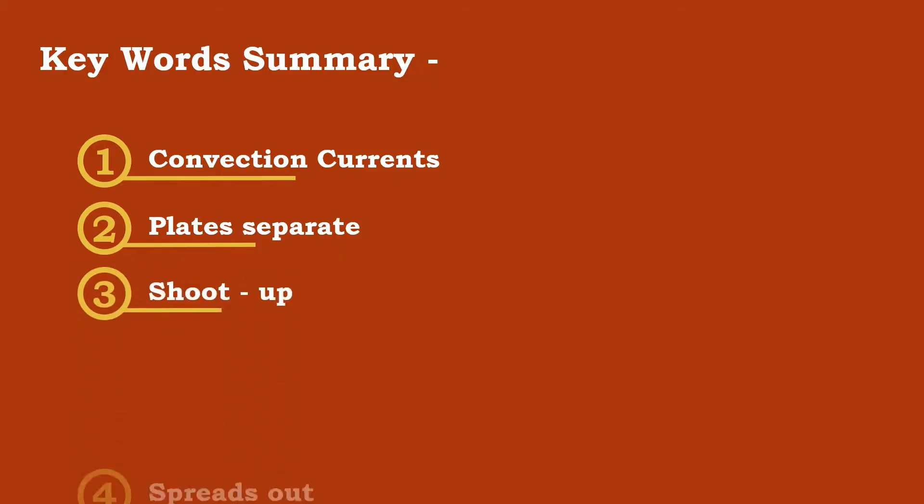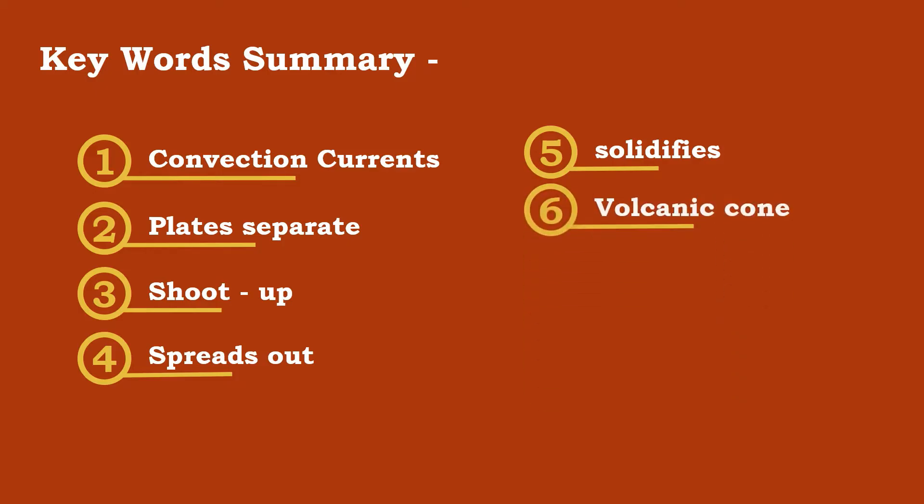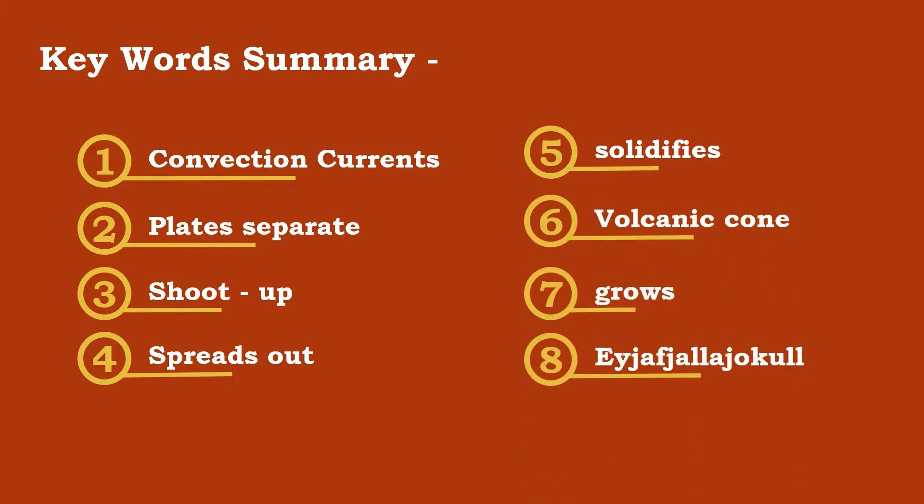So let's look at the keyword summary. Convection currents. Plates separate. Shoots up. Spreads out. Solidifies. Volcanic cone. Grows. Use these eight keywords and you're on to a winner.